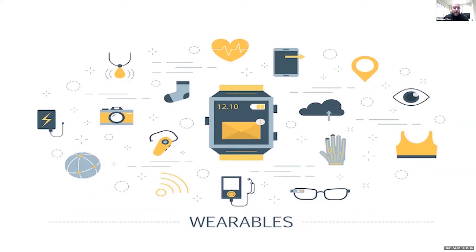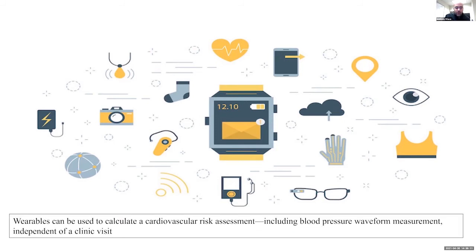The next technology we want to use is wearable technology. As everybody knows, the wearable revolution has already taken off, and we can get a lot of very reliable medical data just from a watch — for example, blood pressure and an EKG. This started when I was a first-year fellow and I thought it was going to be the bane of my existence with everybody bringing in EKG tracings to clinic. In fact, I find it so useful that I now ask patients to get these when I think it would be helpful, and I find very high-quality signals. We want to use wearables to calculate a cardiovascular risk assessment, including a blood pressure waveform, independent of a clinic visit.